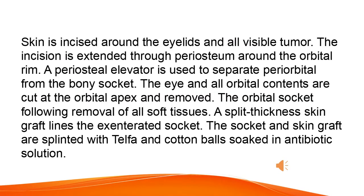Skin is incised around the eyelids and all visible tumor. The incision is extended through periosteum around the orbital rim. A periosteal elevator is used to separate periorbita from the bony socket. The eye and all orbital contents are cut at the orbital apex and removed. The orbital socket following removal of all soft tissues is lined with a split-thickness skin graft, which is then splinted with telfa and cotton balls soaked in antibiotic solution.